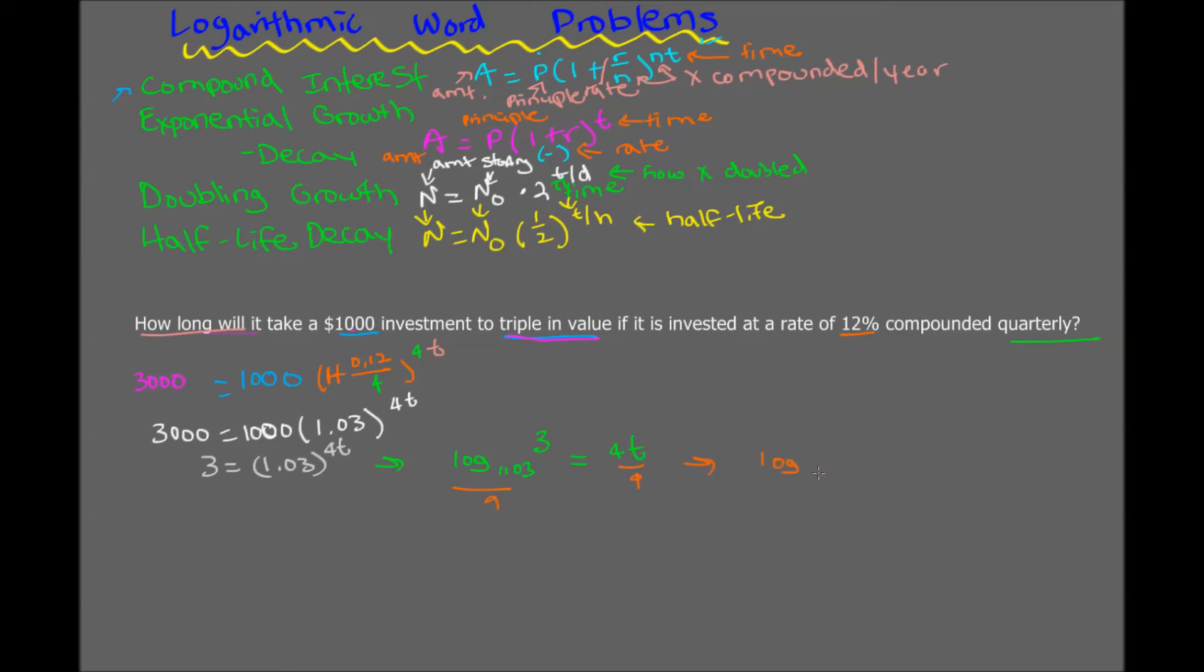Log base 1.03 of 3, which is approximately equal to 9.3. So therefore, it'll take approximately 9.3 years to triple your money from 1,000 to $3,000. And that's how you solve a logarithmic word problem. I'll see you next time. Thank you.